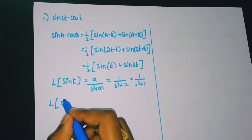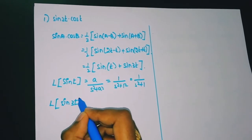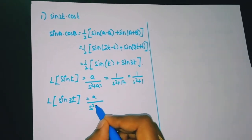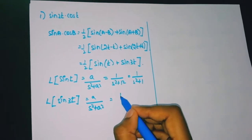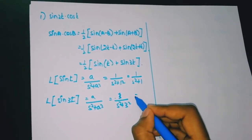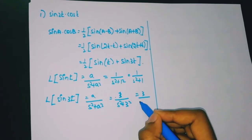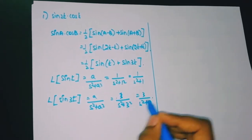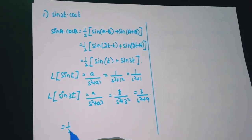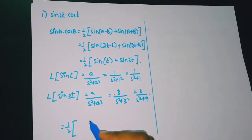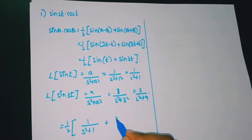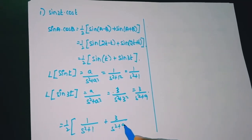Laplace of sin(3t): that is 3/(s² + 9). So combining, we get (1/2)·[1/(s² + 1) + 3/(s² + 9)].